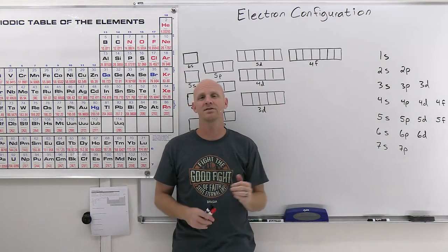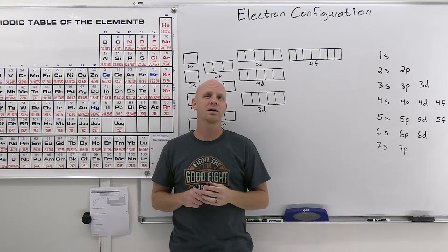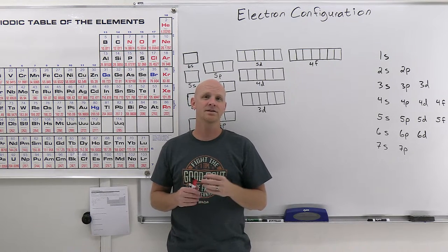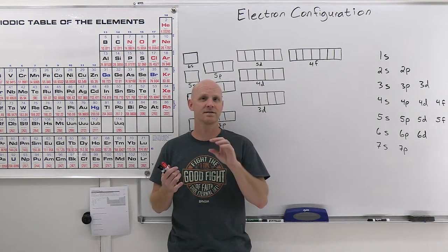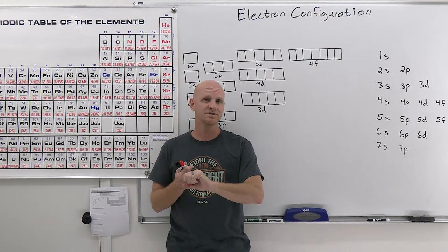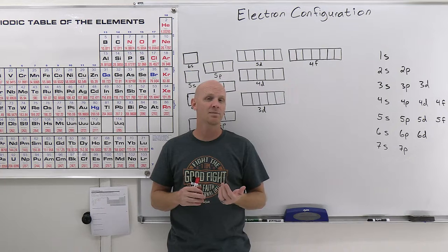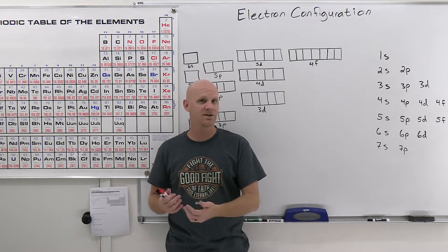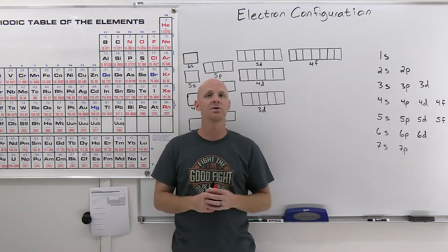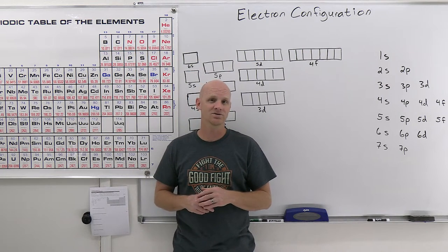Electron configuration is going to be the topic in this lesson, and we've got a lot of ground to cover. We'll talk about the rules for filling in electrons in an atom, encompassing the Aufbau principle, Hund's rule, and the Pauli exclusion principle. We'll talk about standard electron configurations, the abbreviated noble gas configurations, standard examples, and notable exceptions you need to be aware of.